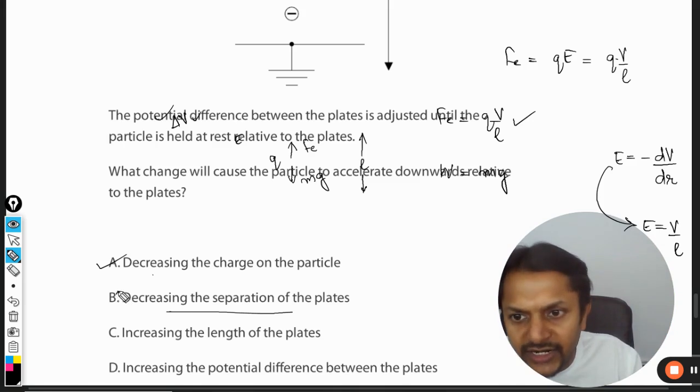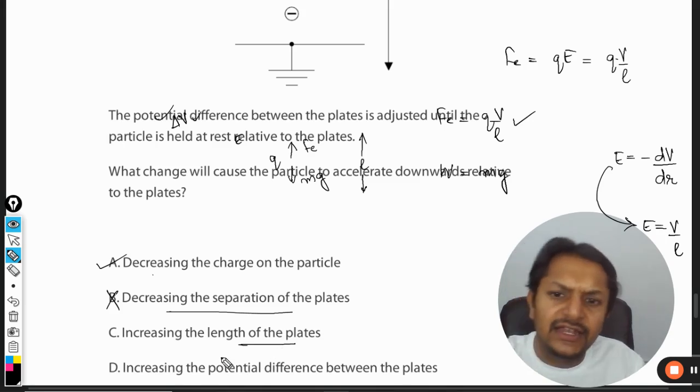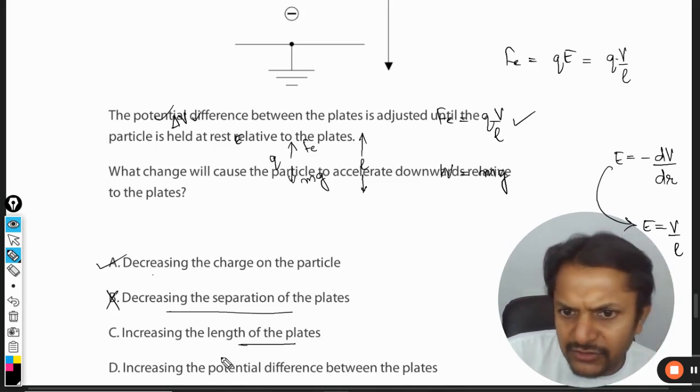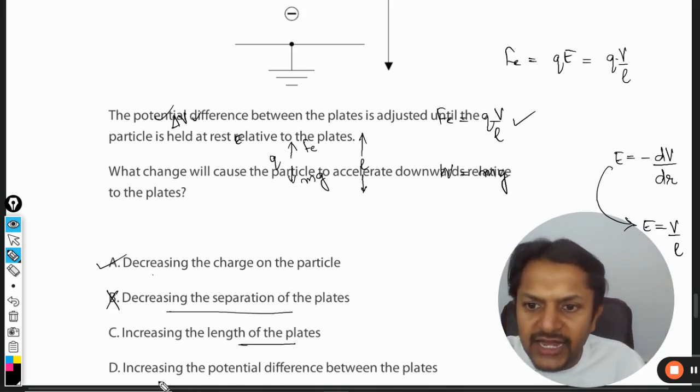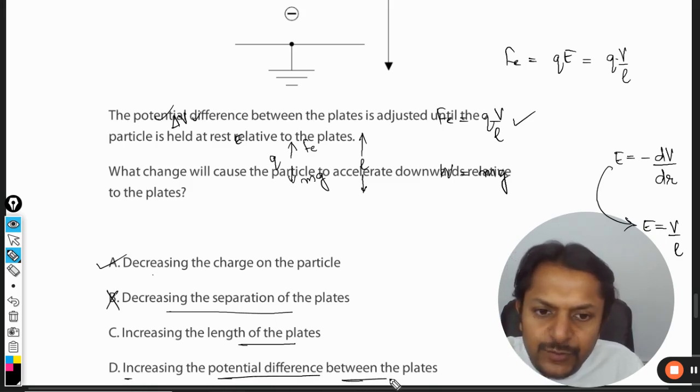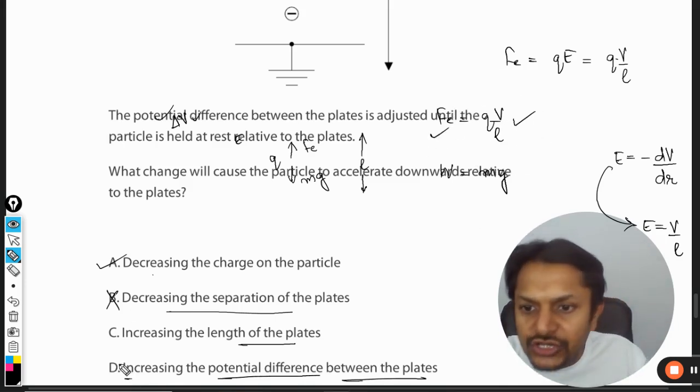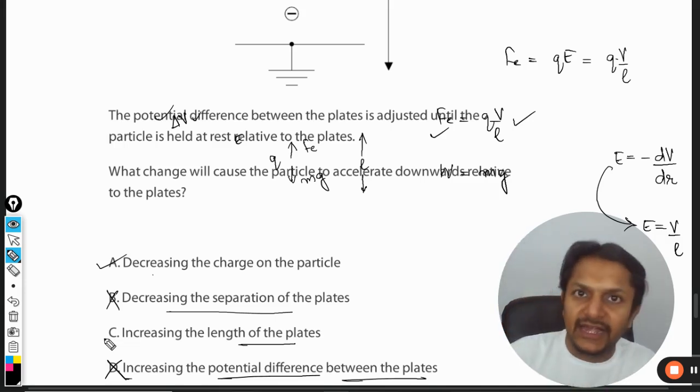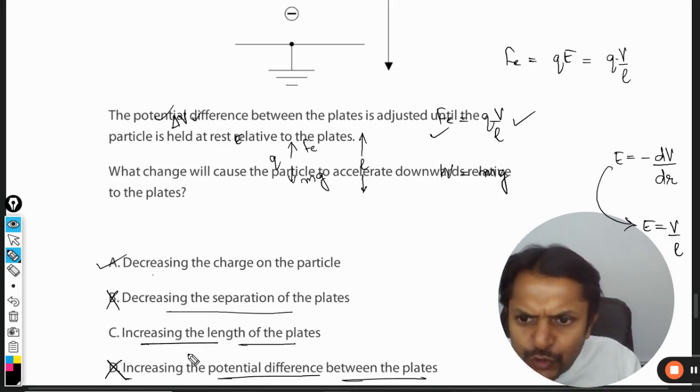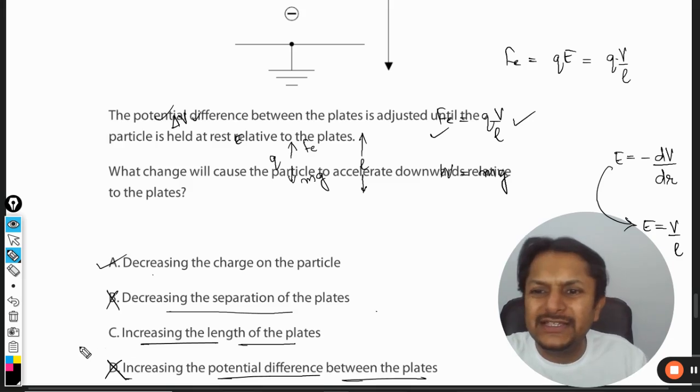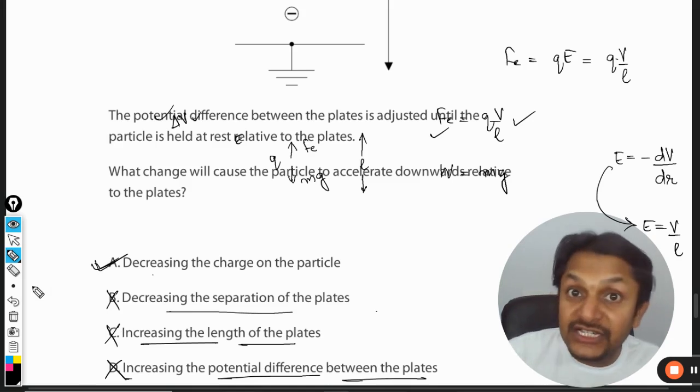Increasing the length of the plates. I don't think it has anything to do with this here. Let us go to D - increasing the potential difference between the plates. If the potential difference is increased, again the upward force is increased, so this is also wrong. The answer is definitely between A and C. This statement is a bit confusing. I think increasing the length of the plate has nothing to do with these, so this is definitely wrong. A will be the correct answer.